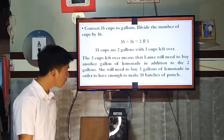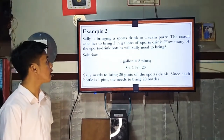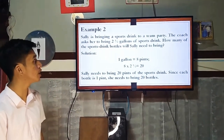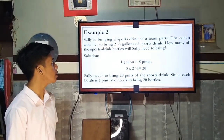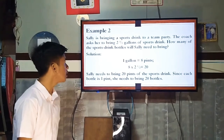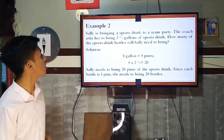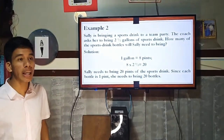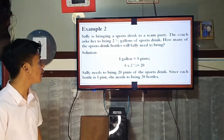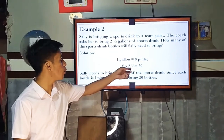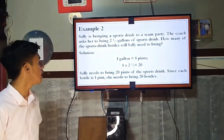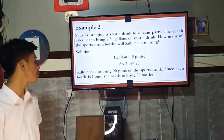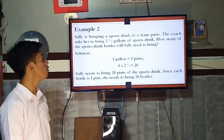The next example: Sally is bringing a sports drink to a team party. The coach asked her to bring 2½ gallons of sports drink. How many bottles will Sally need to bring? Since 1 gallon is 8 pints and each bottle of sports drink is equal to 1 pint, 8 pints times 2½ gallons equals 20. Sally needs to bring 20 bottles of sports drink.